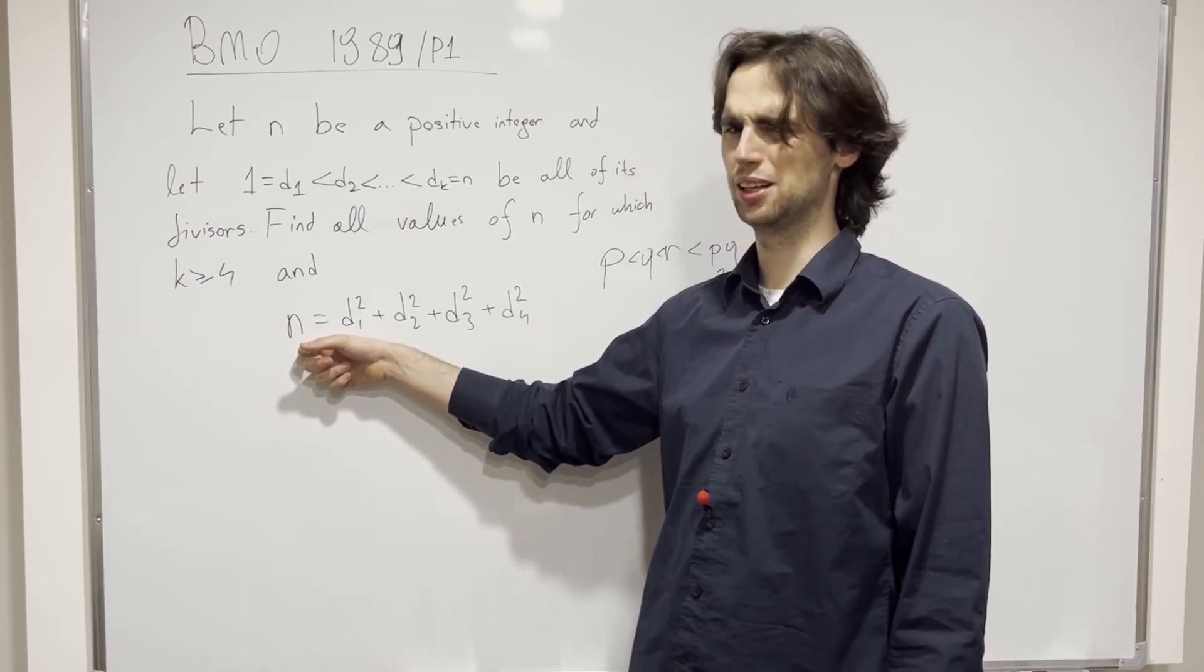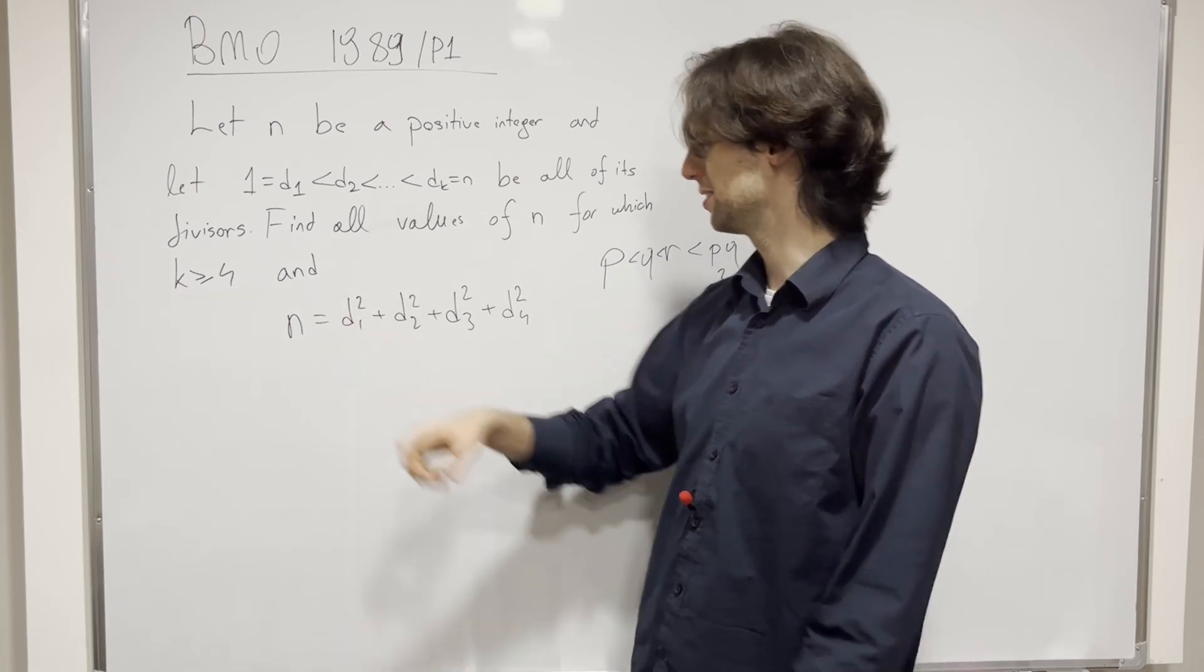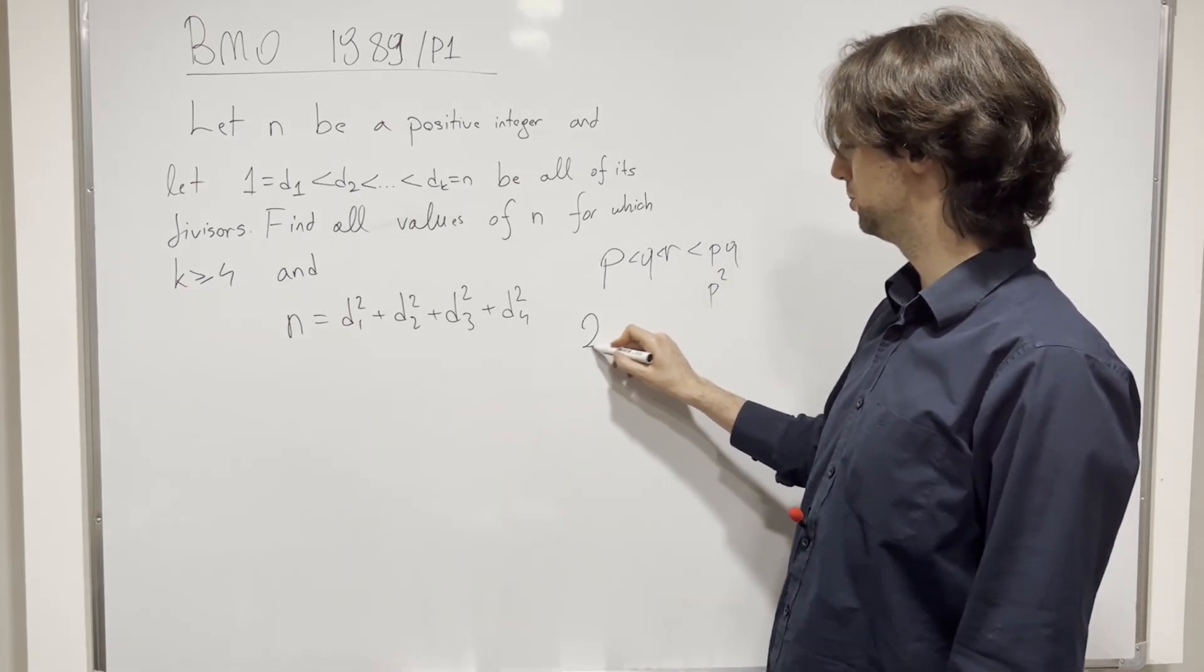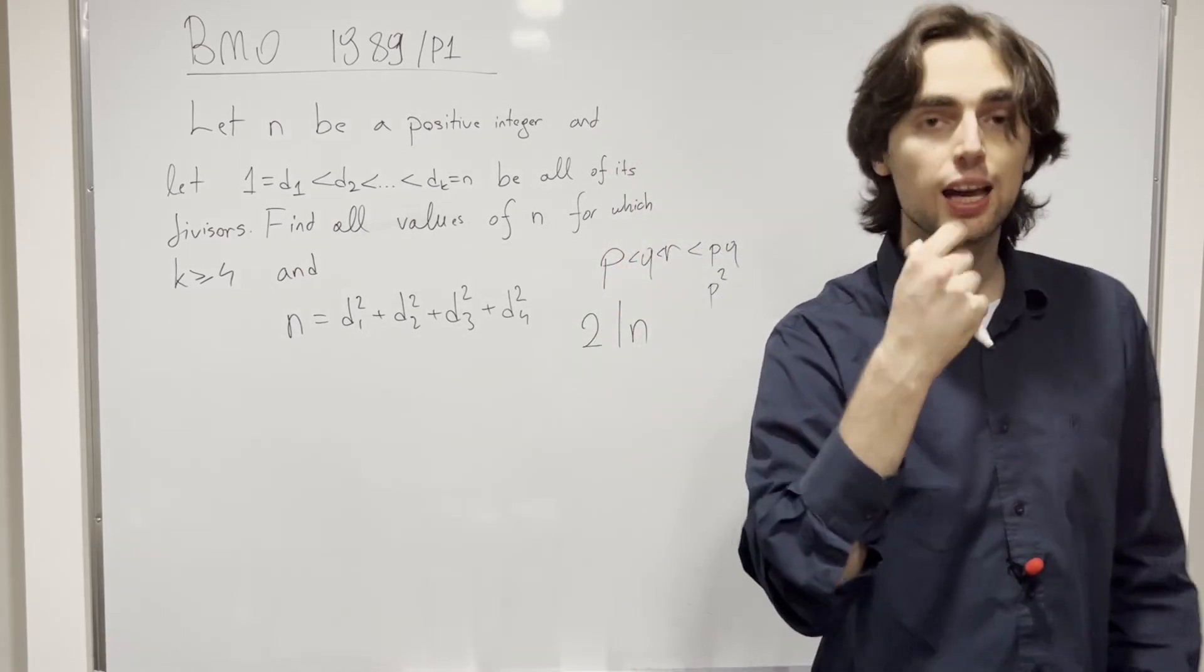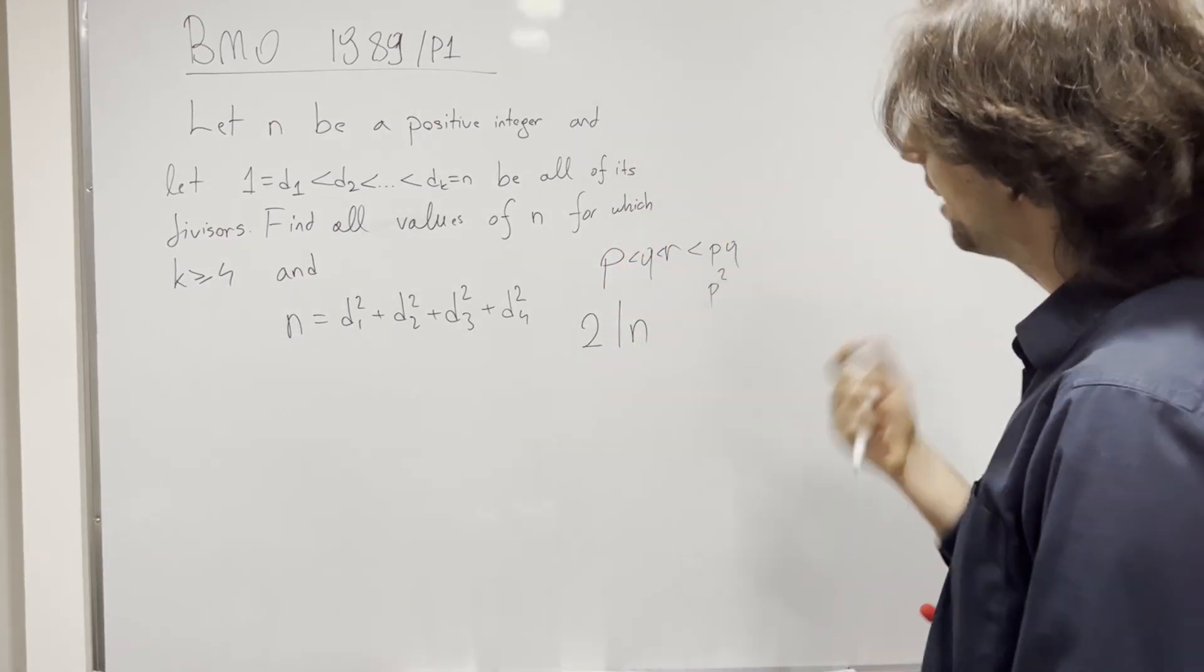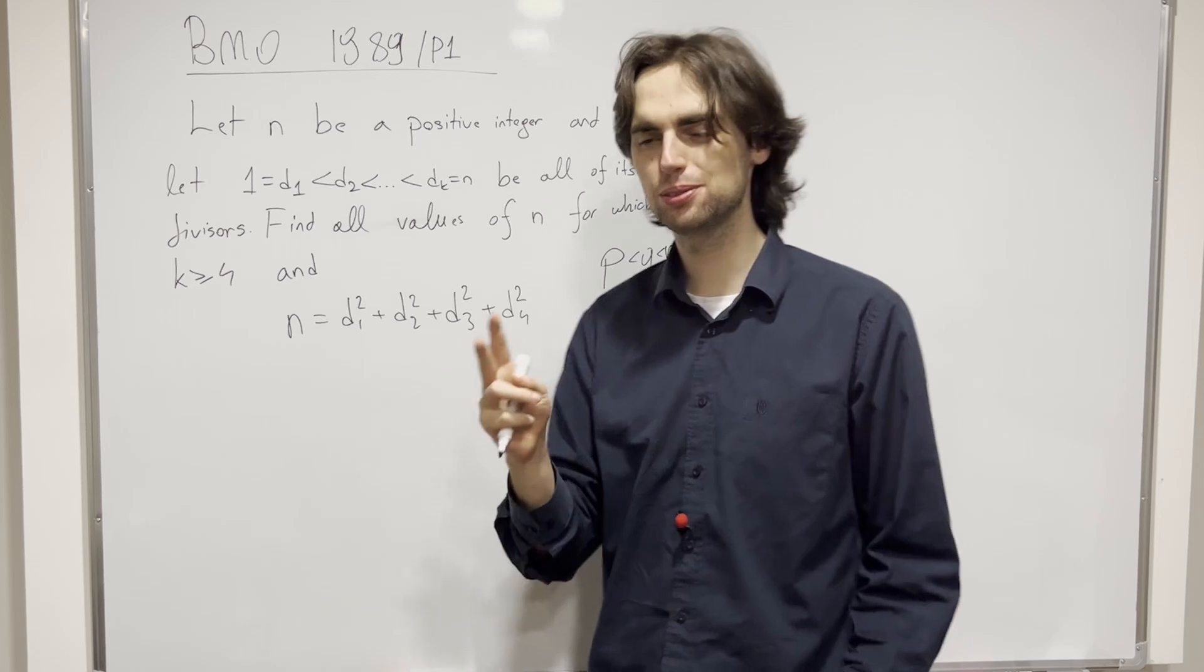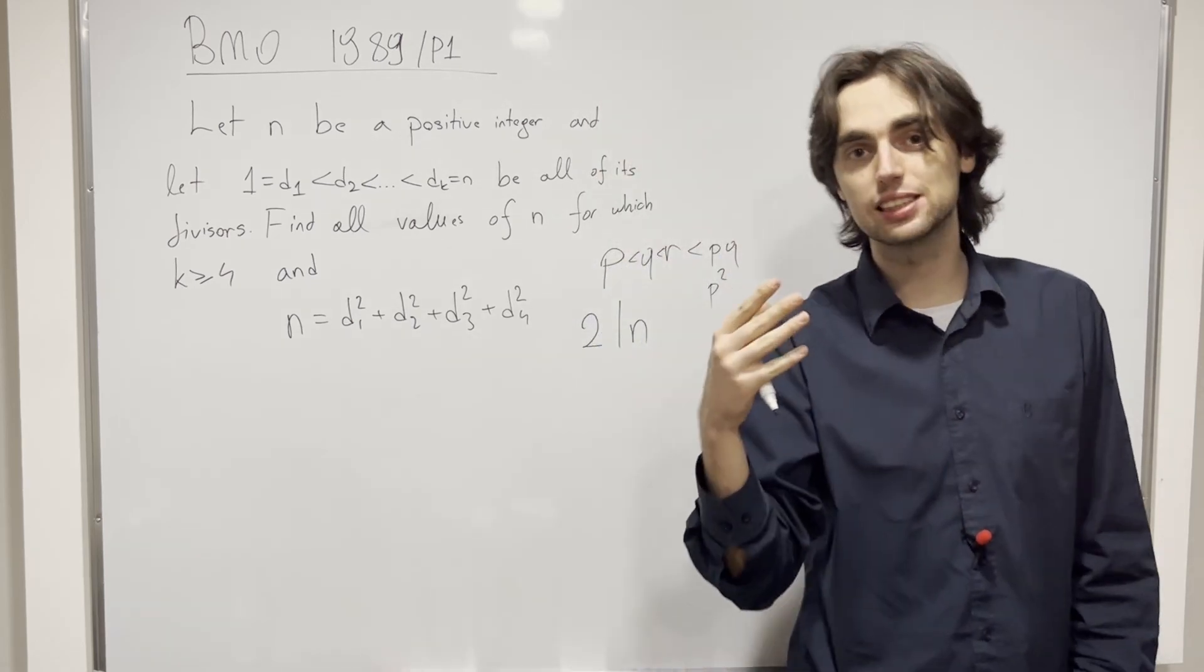So this means that 2 actually divides n, so we have 2 divides n, so in fact, d2 is equal to 2. And now what does this mean? I invite you, please, pause for 2 to 3 minutes, and ask yourself, what does this mean now?